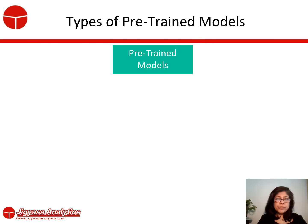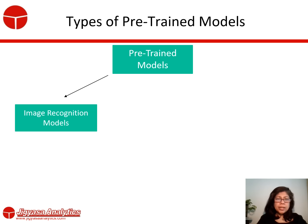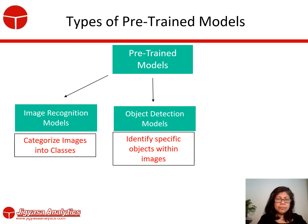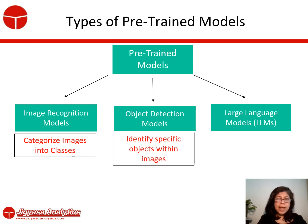There are many types of pre-trained models available. There are pre-trained image recognition models, which are extremely good for image classification. Then there are pre-trained object detection models, which can be used to identify specific objects within images. And then, of course, there are pre-trained language models, which can be used for natural language processing, as well as classification tasks such as sentiment analysis.